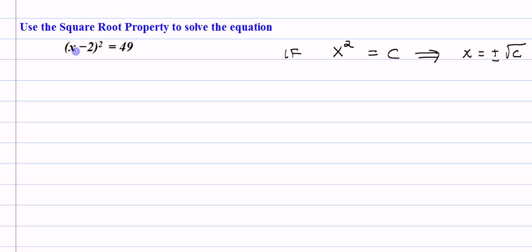So, when you look at the equation that we're trying to solve, it's not a simple single variable squared, it's this binomial x minus 2 squared. That's okay, because the whole thing is being squared.